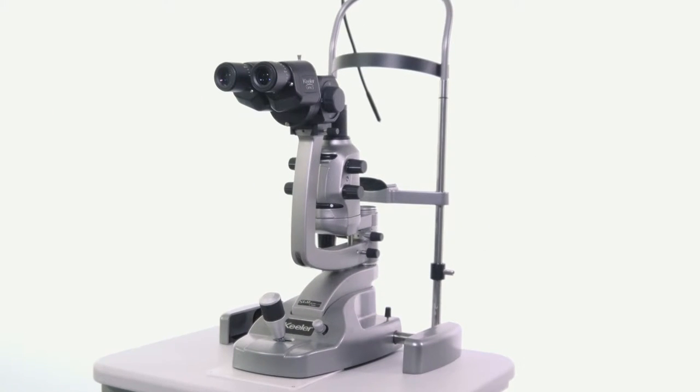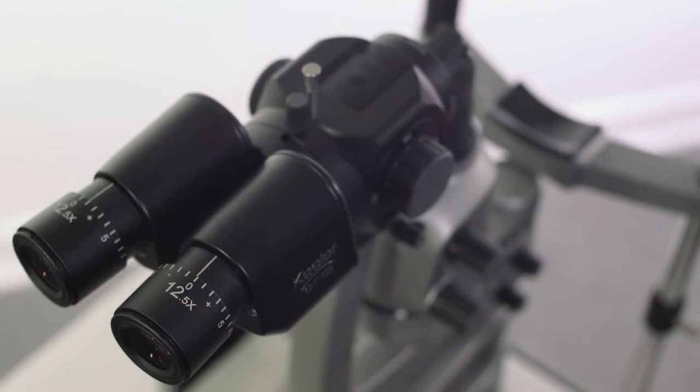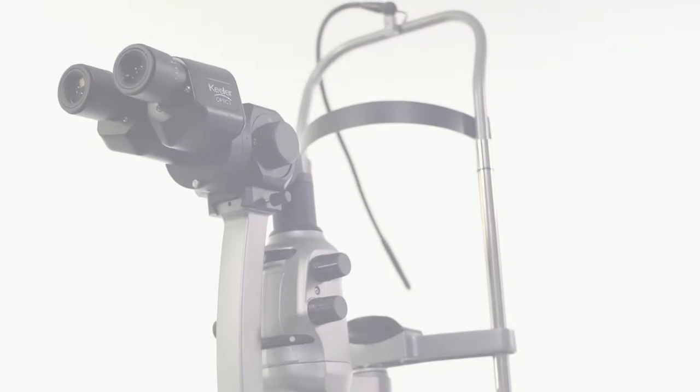The Z-Series slit lamp is our lower illumination compact system that is used for examination of the anterior segment and posterior segment of the eye. This video will provide an overview of the features of the Z-Series and instructions on how to use it.